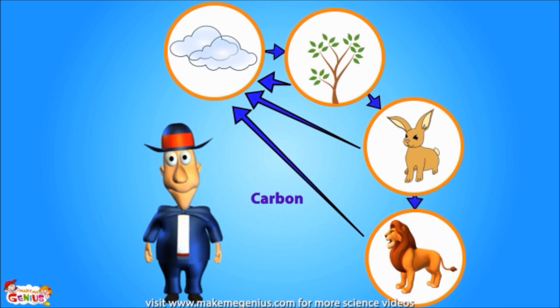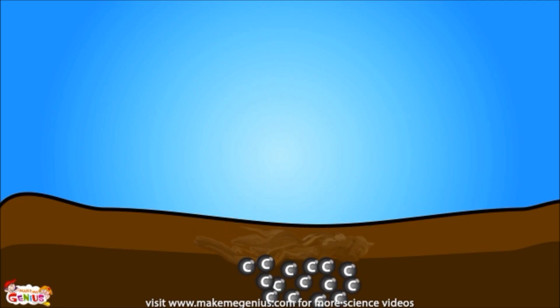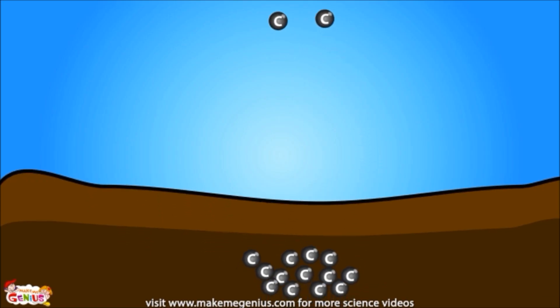Now, a question for you. Do you know what happens to all that carbon stored in a body when it dies? When a plant or animal dies, most of the stored carbon goes back into the soil. Some of it goes back into the air, but most of it gets trapped in the soil.